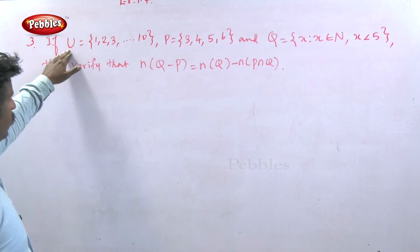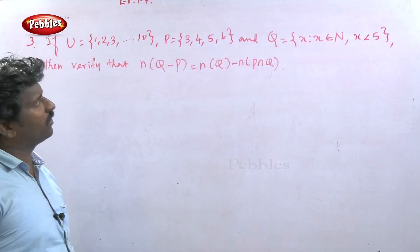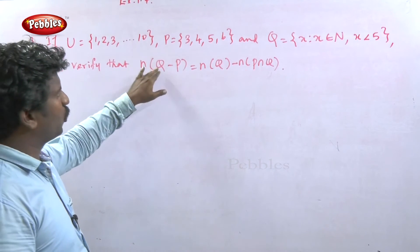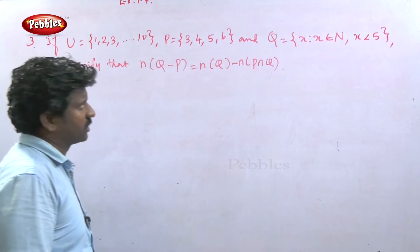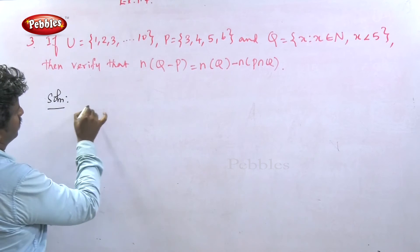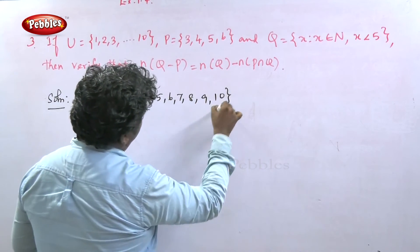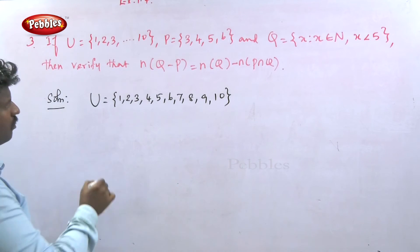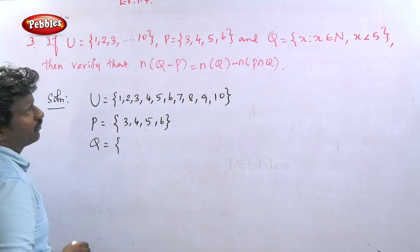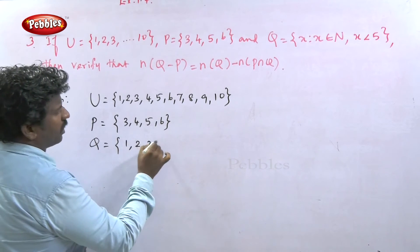Next problem: U equals {1, 2, 3, 4, 5, 6, 7, 8, 9, 10}, P equals {3, 4, 5, 6}, Q equals the set of x such that x belongs to natural numbers and x is less than 5, so Q equals {1, 2, 3, 4}. Verify that n of Q minus P equals n of Q minus n of P intersection Q.